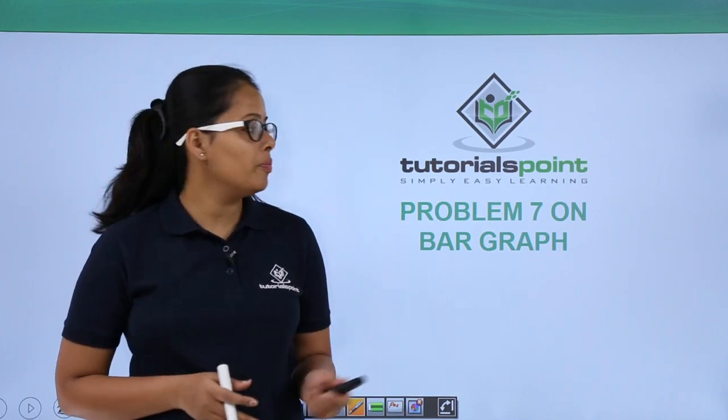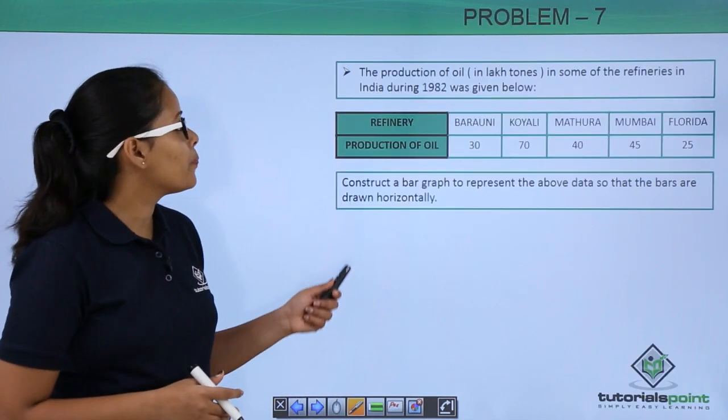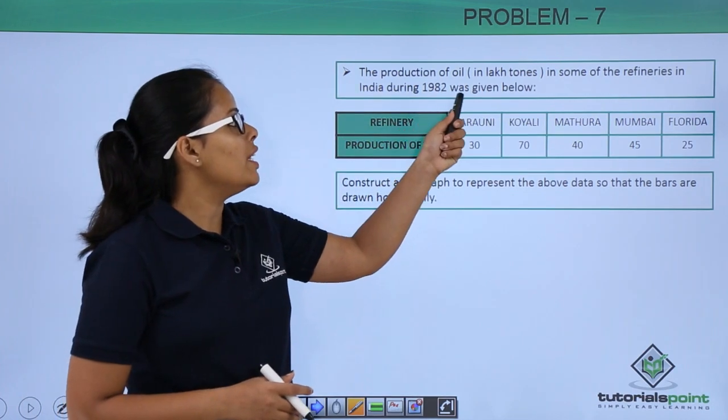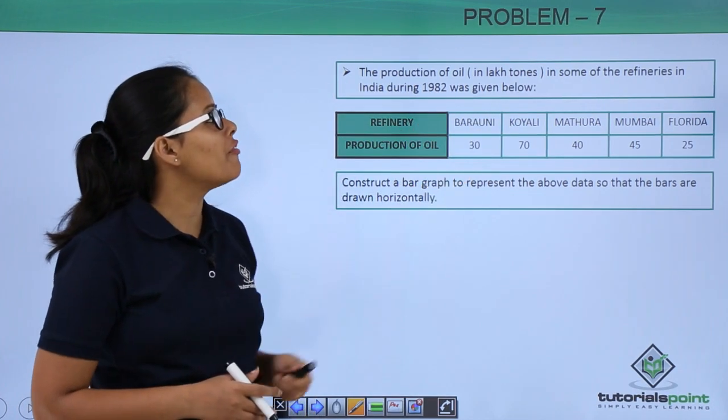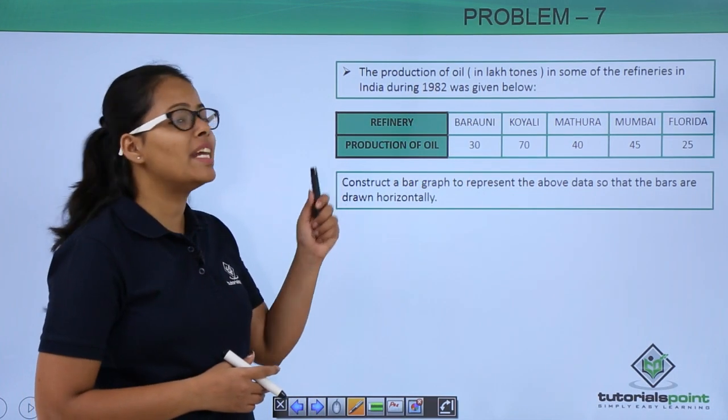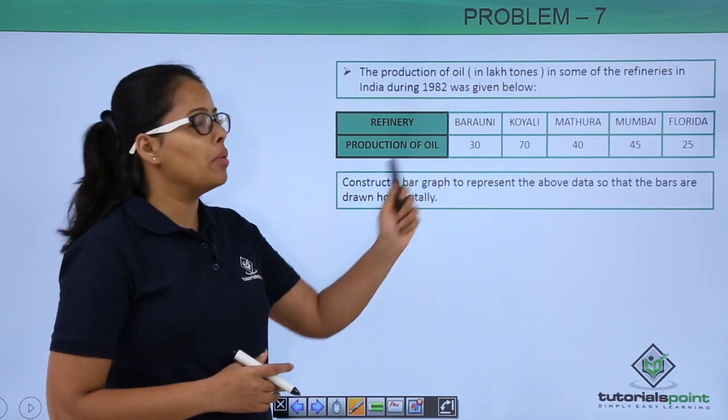Hey guys, let's solve this problem. This problem says the production of oil in lakh tons in some of the refineries in India during 1982 is given below.